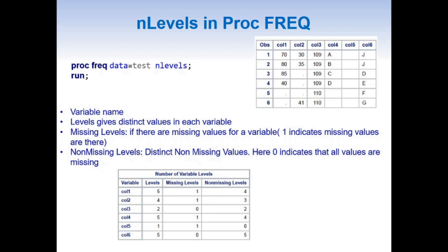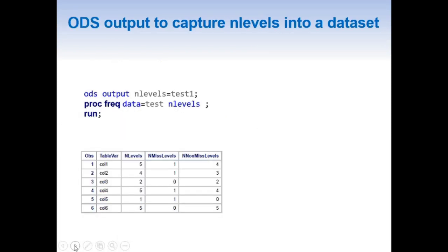By using Missing Levels and Non-Missing Levels, we can find columns with any or all missing values very easily. To build a report, we first need to capture these results into a dataset. We add ODS OUTPUT NLEVELS equal to the dataset name we want to write. The resulting dataset has the same four columns described earlier. The column that captures information about all columns in our test dataset is known as 'TableVar.'